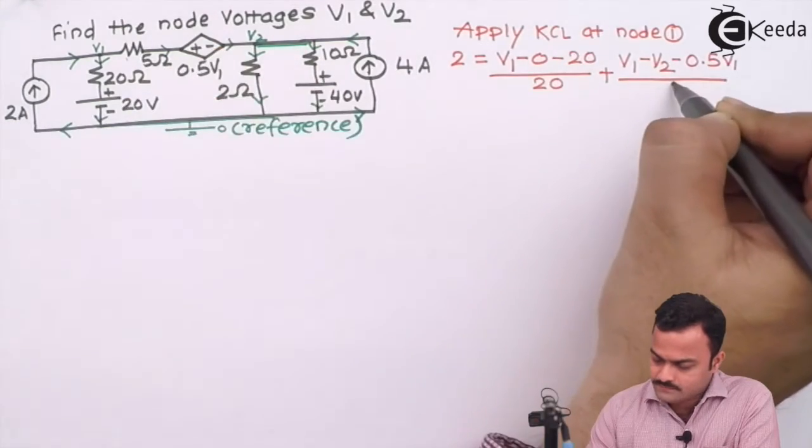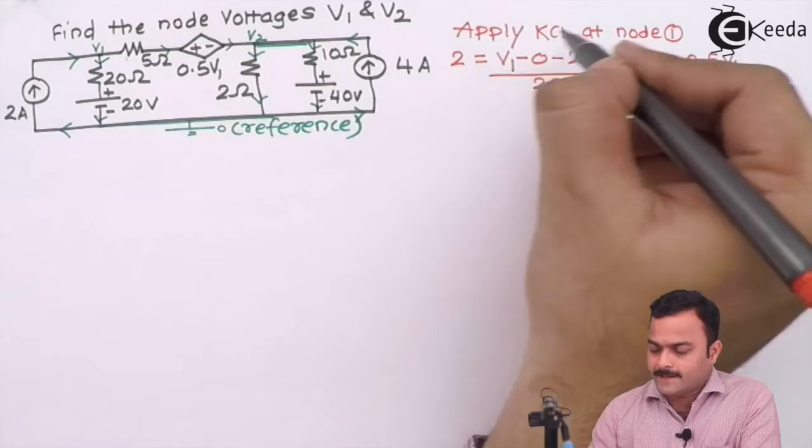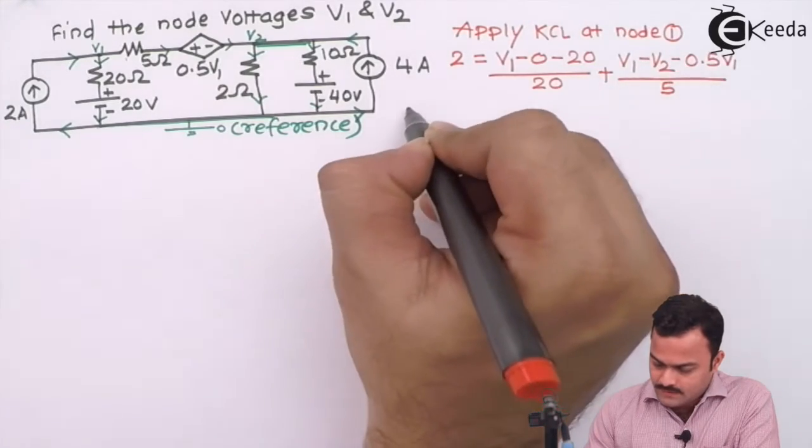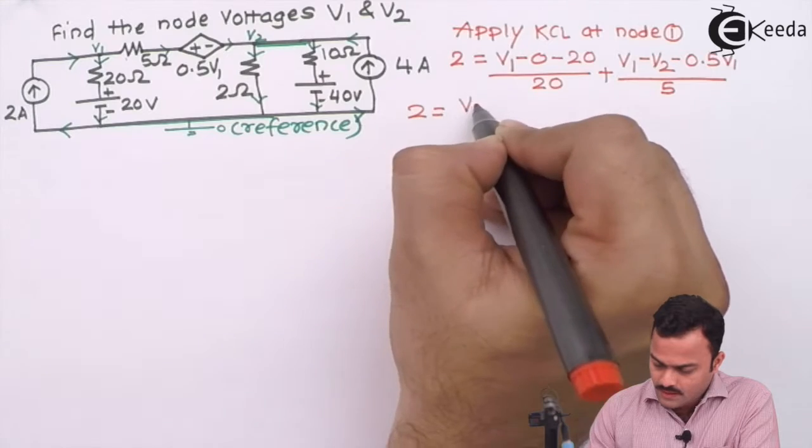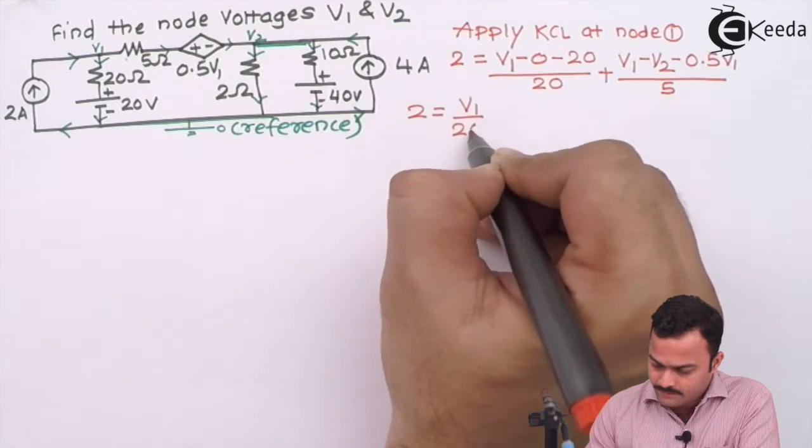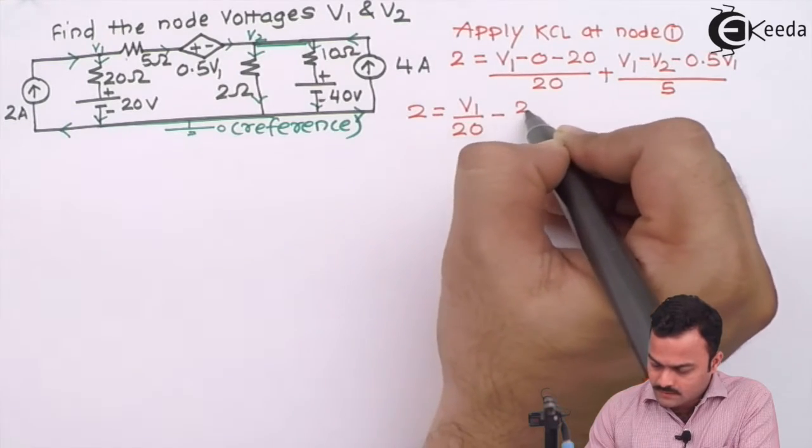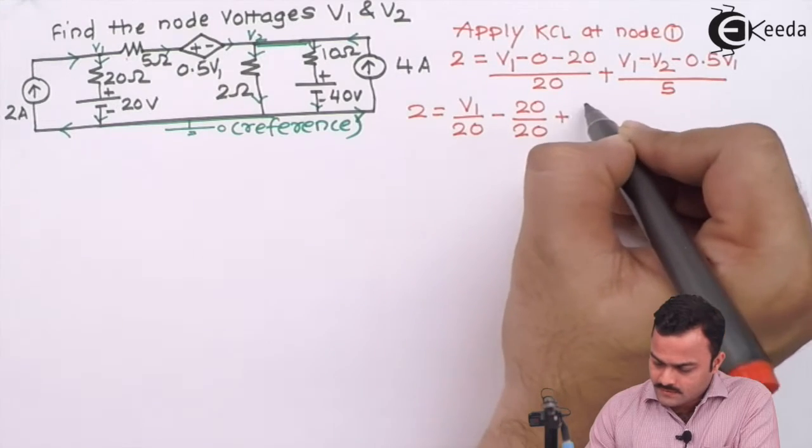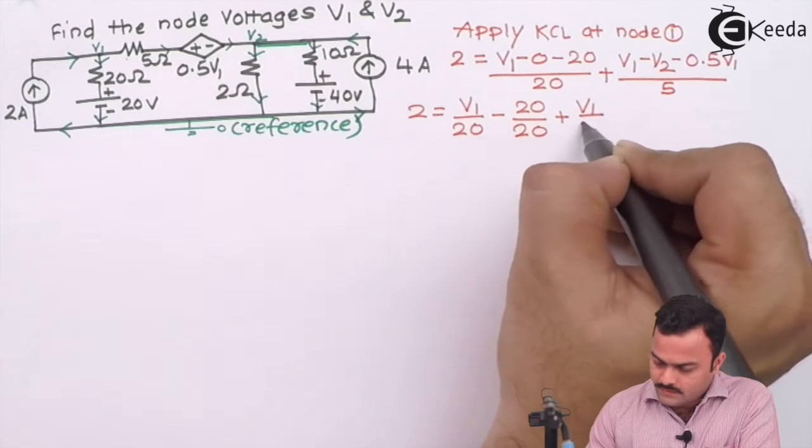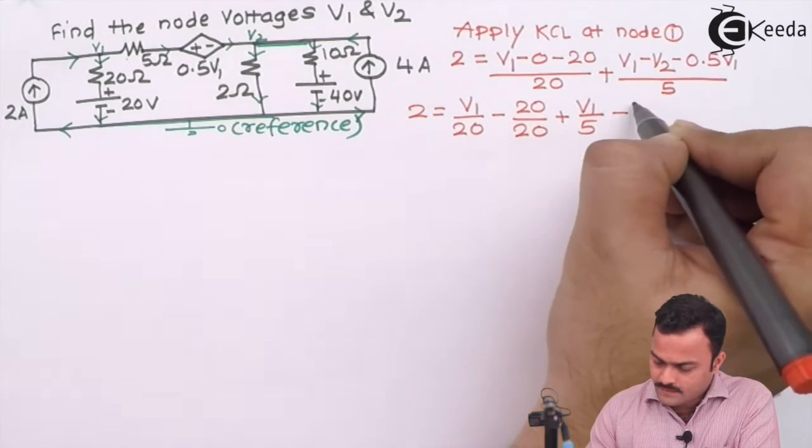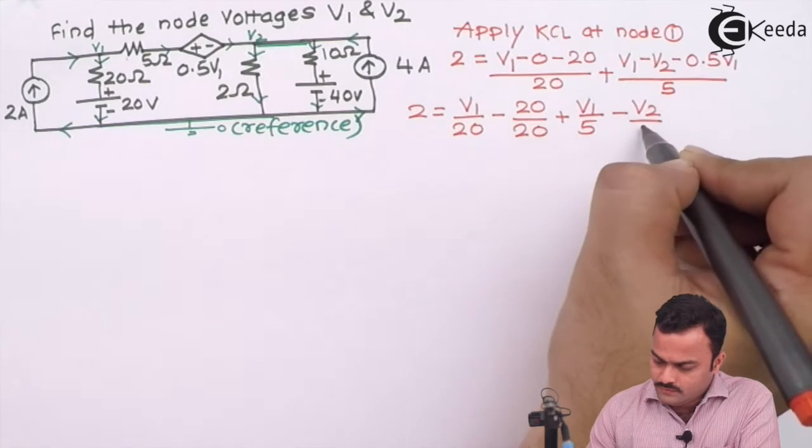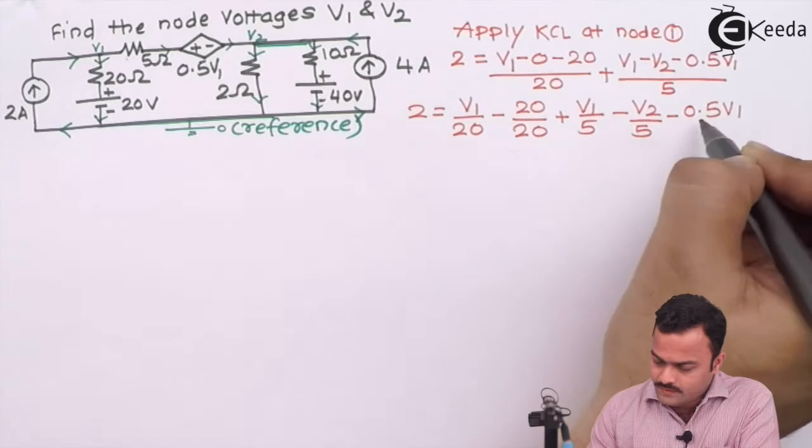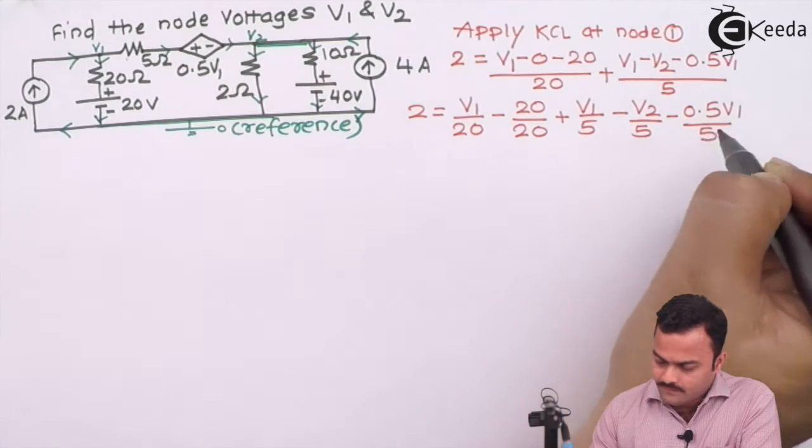Hence minus its value, which is 0.5 V1, and the branch is having a resistance of 5 ohm. In the end we are getting an equation like this. Let's simplify: 2 equals V1 divided by 20 minus 20 divided by 20 plus V1 divided by 5 minus V2 divided by 5 minus 0.5 V1 divided by 5.